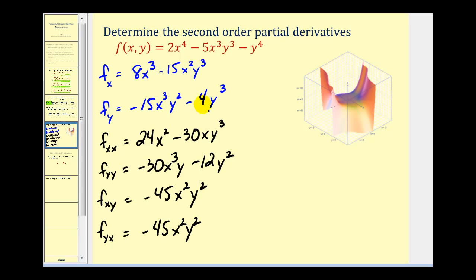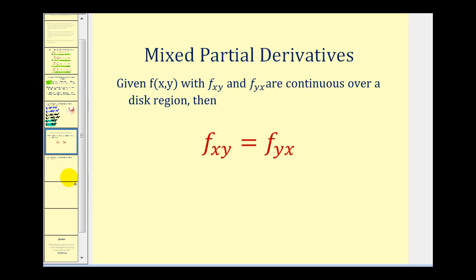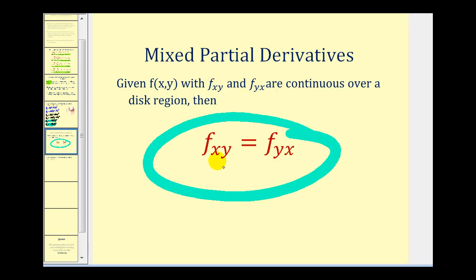Differentiating with respect to x, the last term becomes zero. One thing you'll notice is that if you take a look at the two mixed partials, they're equal to each other. In fact, they will always be equal to each other. These two mixed partials will always be equal as long as they are continuous over a specific region. So in the future, if we find one of these, we also know the other.